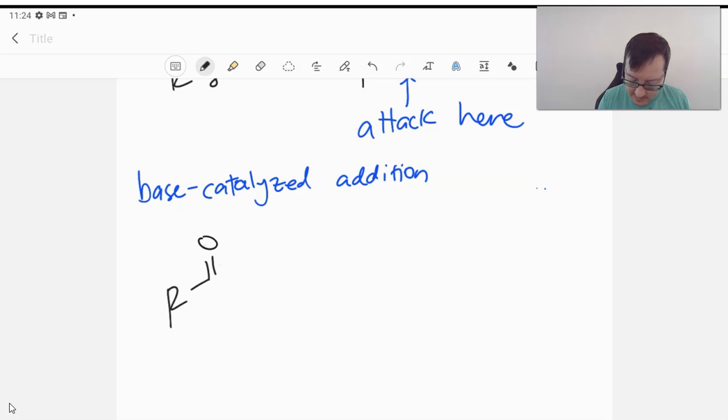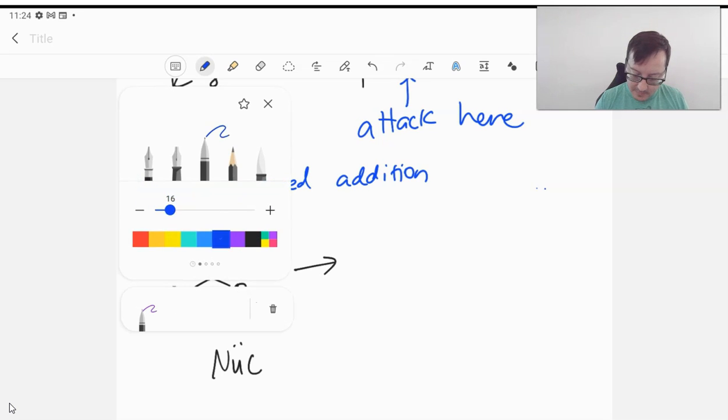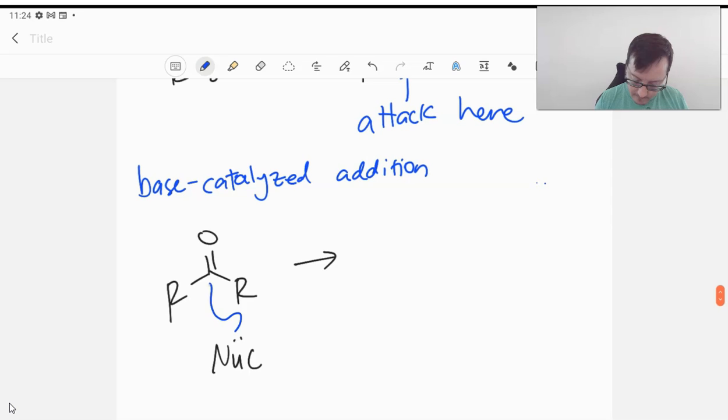We have our aldehyde or ketone. We've got our dear friend, the nucleophile, whatever that may be. We will have our molecule open up its carbonyl and accept the nucleophile, whatever that may be. Maybe a Grignard reagent, for example. We're going to assume our nucleophile will be negatively charged, generally speaking.